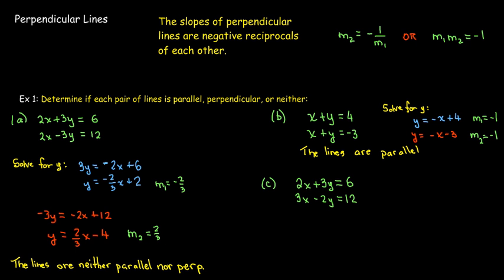And for the last pair, in the first line, 2x plus 3y equals 6. I solve for y, I get negative 2 thirds times x. So, my first slope is negative 2 thirds.